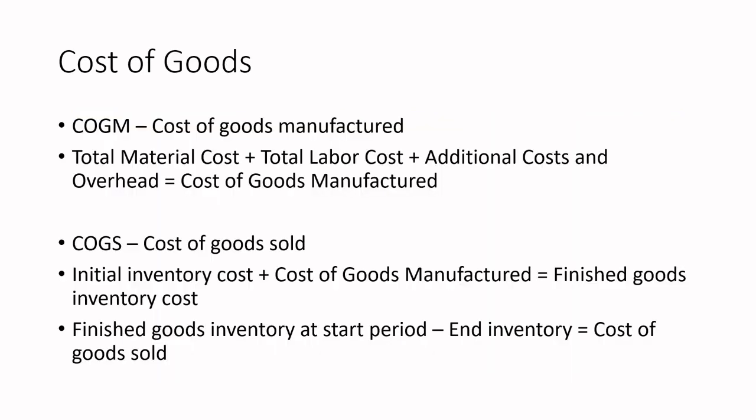Cost of goods manufactured is your total material costs — ingredients, packaging materials, glues, inks, labels — plus your labor cost plus any additional costs and overhead. Cost of goods sold is a term that gets mixed up with cost of goods manufactured. Cost of goods sold usually means: your beginning inventory plus cost of goods manufactured, giving you goods available, minus ending inventory equals cost of goods sold. It's more of a macro value, but you can calculate cost of goods sold per unit to determine your unit cost.